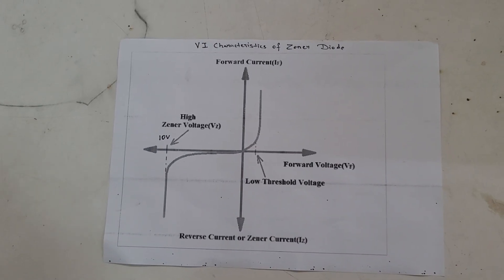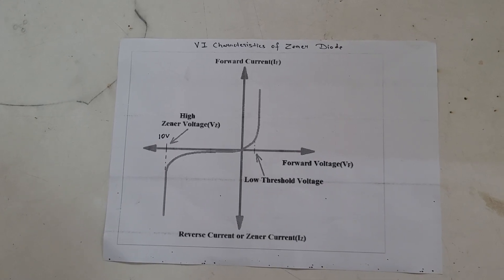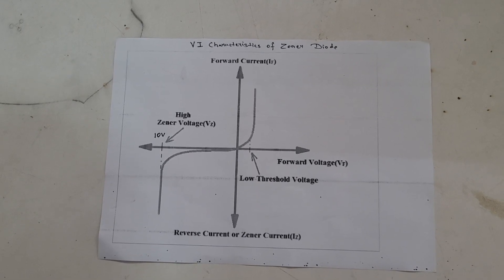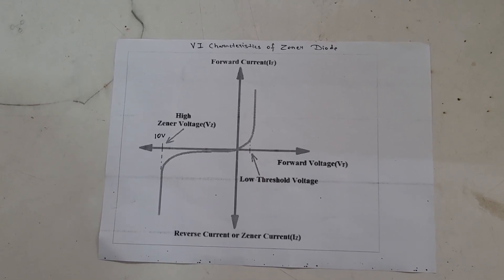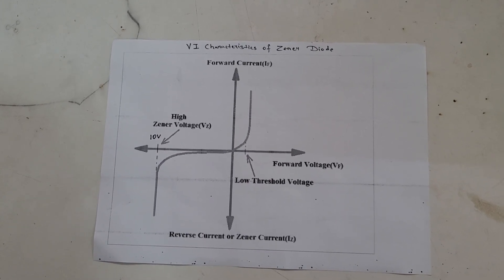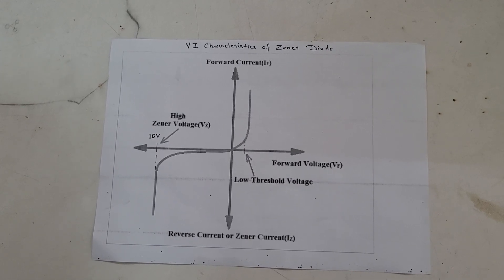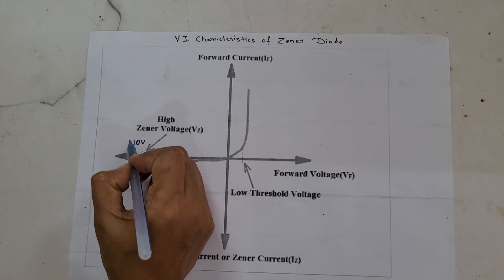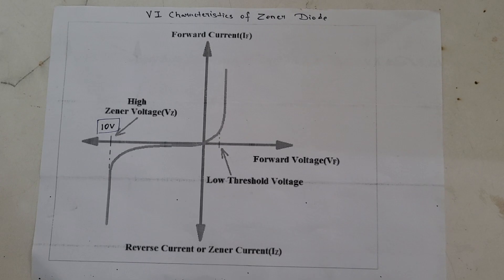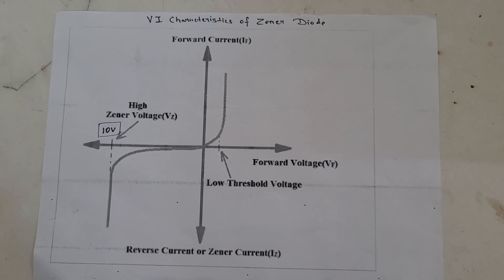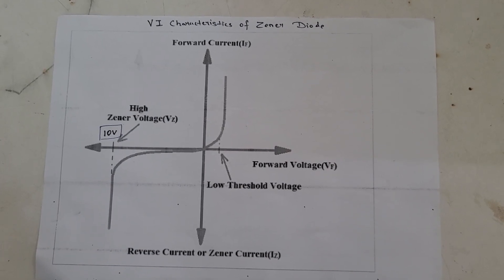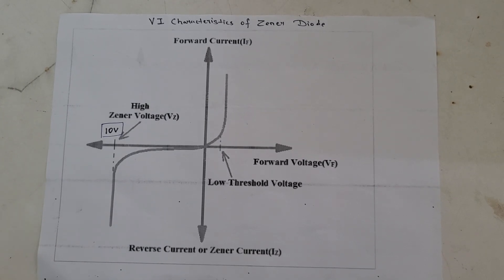This is the VI characteristic of the Zener diode which we need to draw. The graph is drawn taking reverse bias voltage along the negative x-axis and reverse bias current along the negative y-axis. In reverse bias, Zener breakdown occurs at a particular voltage called the Zener voltage Vz, which in our case is 10 volts. A large amount of current flows through the diode, which is the characteristic of a Zener diode. As the reverse voltage increases to a certain value, the reverse current increases drastically and sharply.